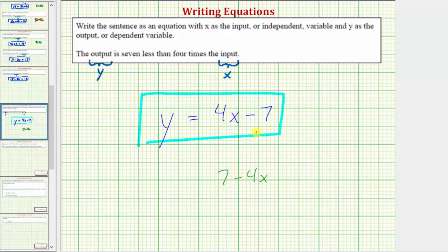And because subtraction is not commutative, meaning if we change the order of subtraction, the difference is not the same, it would be wrong to use the expression seven minus four x for seven less than four times x. It must be four x minus seven.